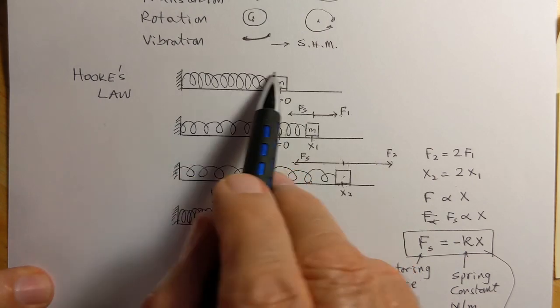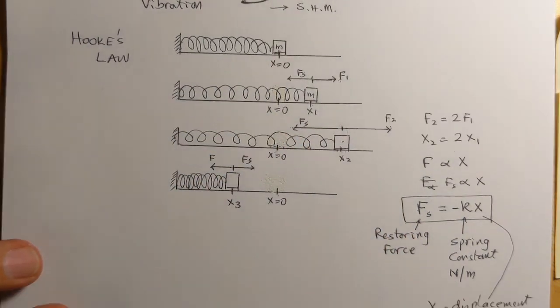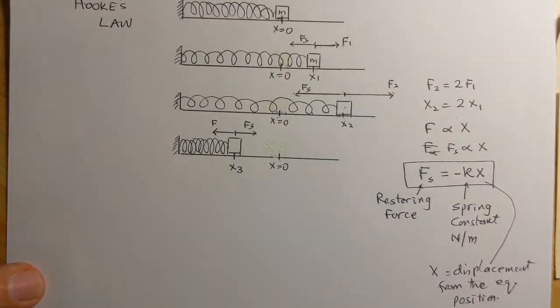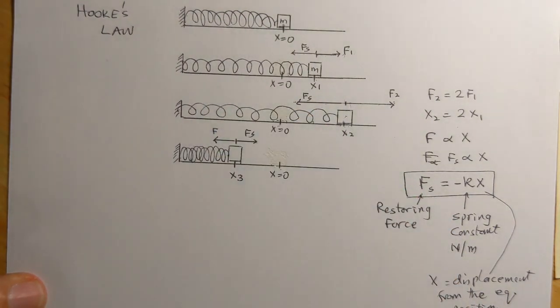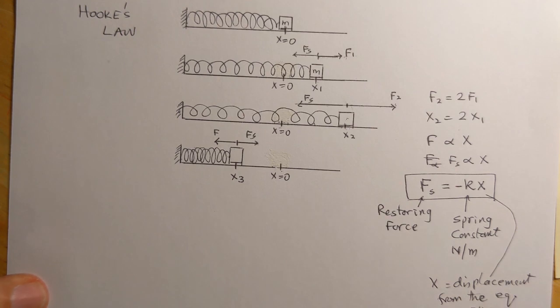The distance is measured from here. The original length of the spring does not come into this equation. It's only how much it has stretched or moved away from the mean position. So this is Hooke's Law.